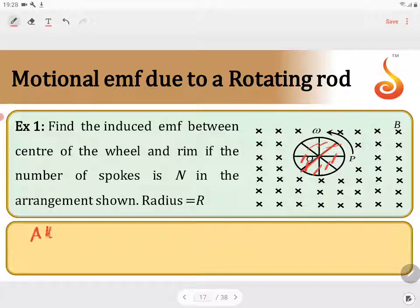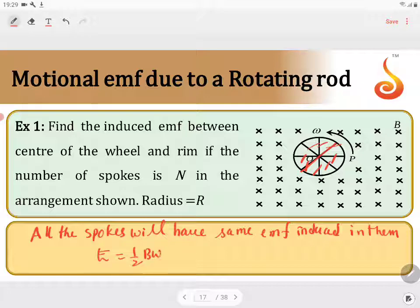All the spokes will have the same EMF induced in them. The EMF will be equal to E = (1/2)BΩR².